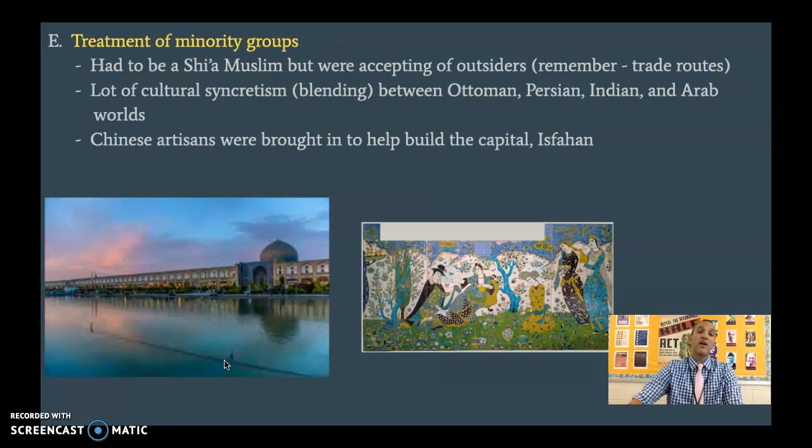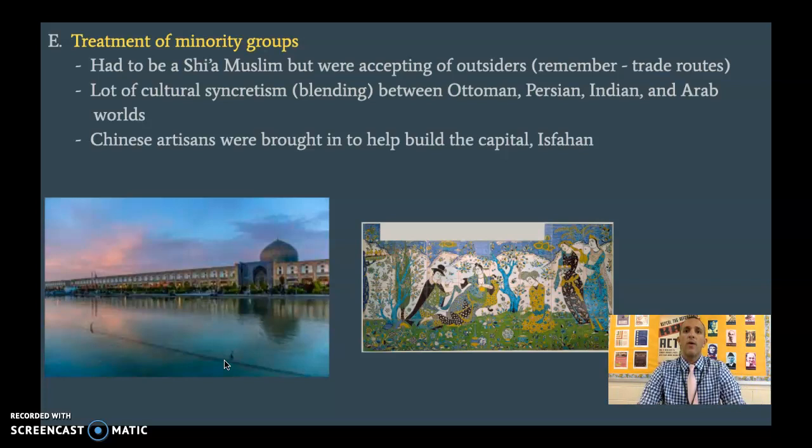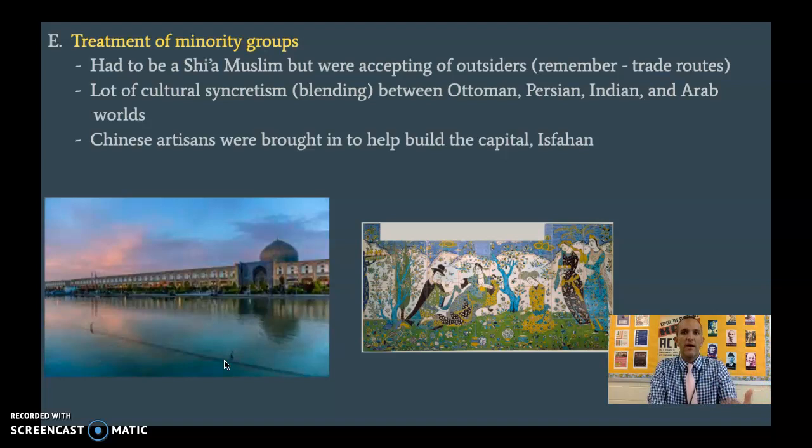How do we treat minority groups? You had to be Shia Muslim to live in the empire. However, they are accepting of outsiders. So if you come into the empire and you're a Christian merchant, they're not going to kill you — they're going to trade with you. If you're a Chinese Buddhist merchant or a Hindu merchant, they'll allow you to trade and won't force you to convert. So in that sense, they are accepting of outsiders.